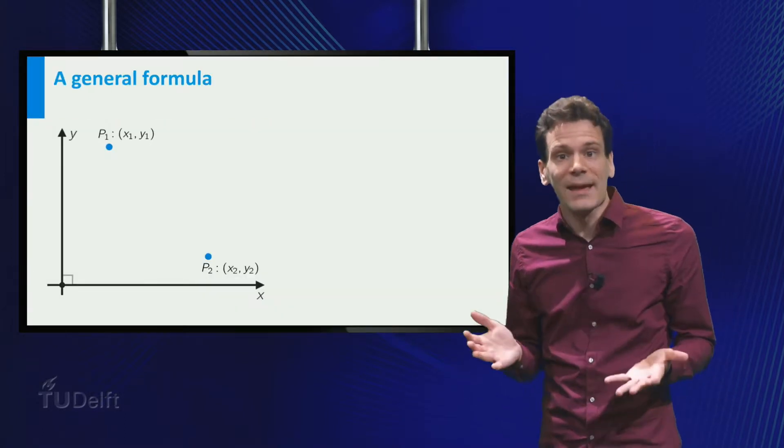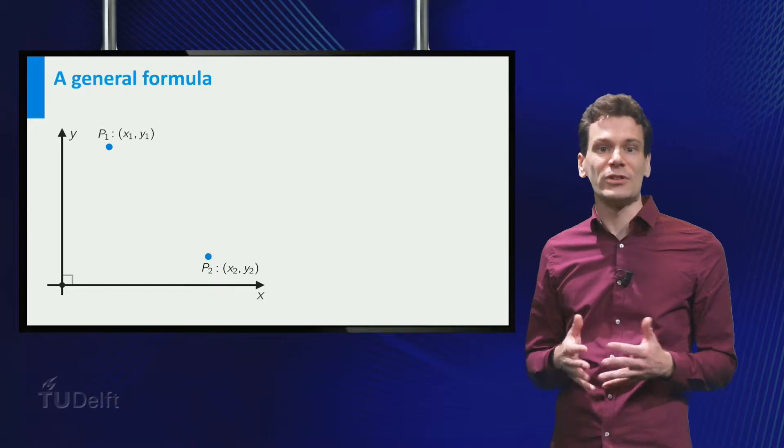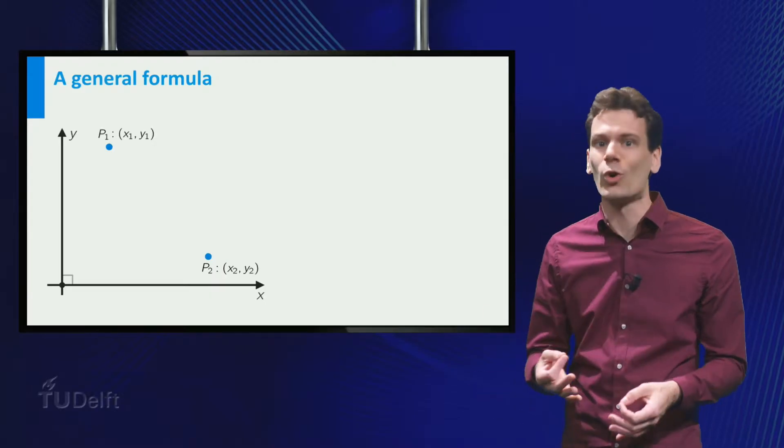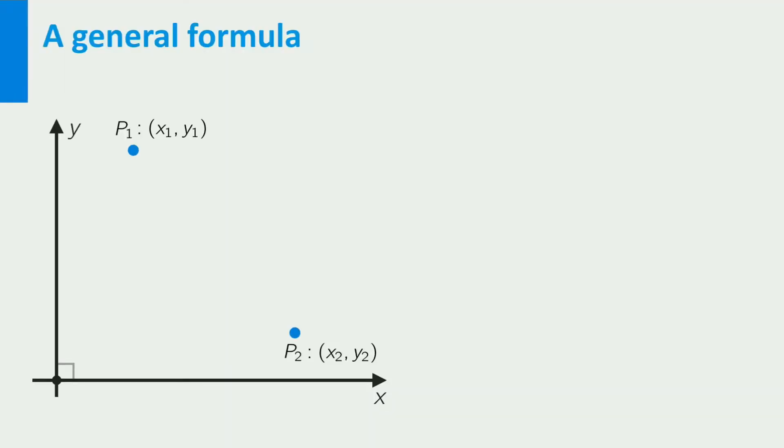This same setup can be used to find a general formula for the distance between points given their coordinates. Suppose two points, p1 and p2, are given in a coordinate system with coordinates (x1, y1) and (x2, y2). To find the distance d, we move from p1 to p2 first parallel to the x-axis and then parallel to the y-axis, just as in the earlier example.